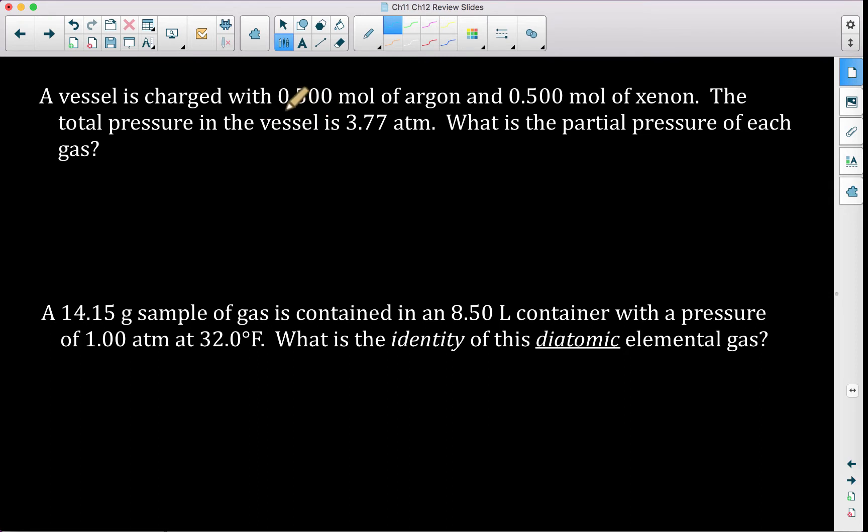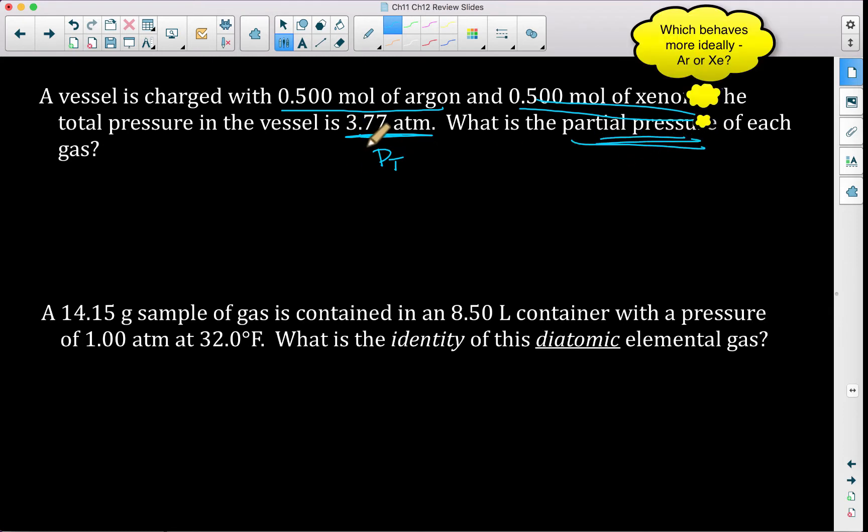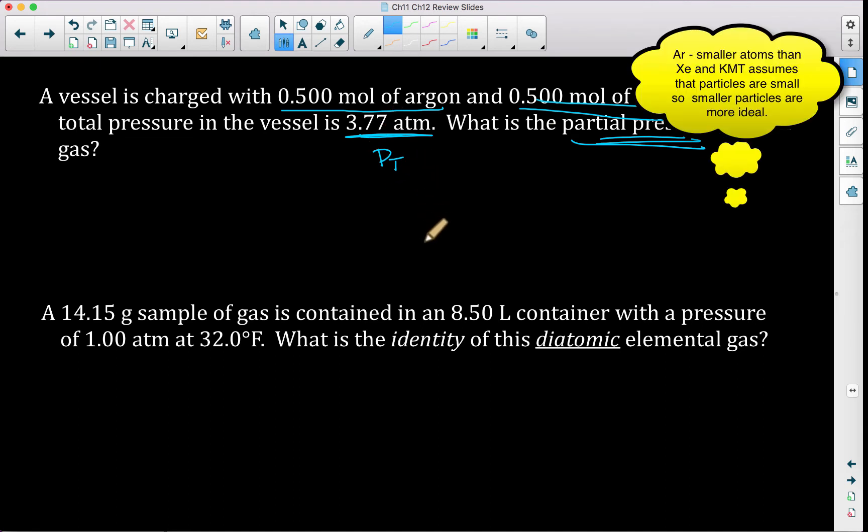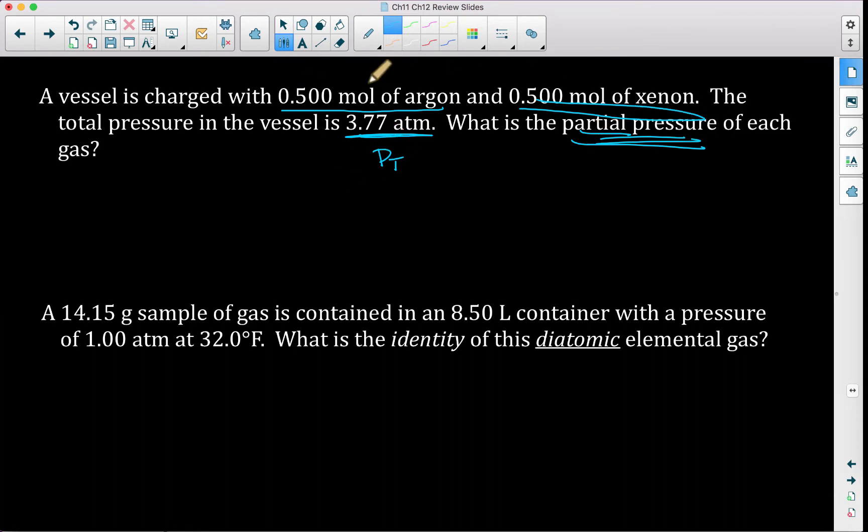Moving on to some more practice problems. It says that a vessel is charged with 0.5 moles of argon and 0.5 moles of xenon. The total pressure in the vessel is 3.77 atm, so this is P total. What is the partial pressure of each gas?